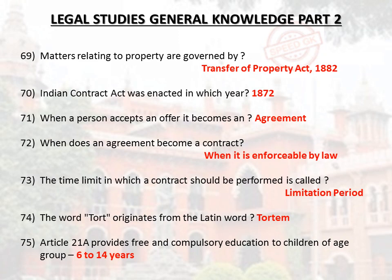Matters relating to property are governed by the Transfer of Property Act 1882. The Indian Contract Act was enacted in 1872. When a person accepts an offer it becomes an agreement. When does an agreement become a contract? When it is enforceable by law. The time limit in which a contract should be performed is called the limitation period. The word tort originates from the Latin word tortum. Article 21A provides free and compulsory education to children of the age group 6 to 14 years.